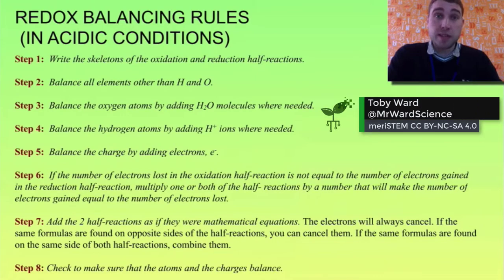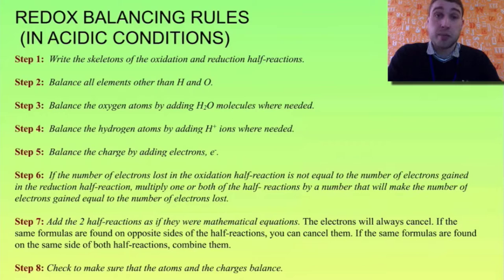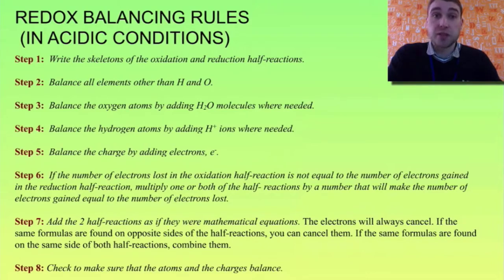Here are the rules for balancing a redox equation in acidic conditions. You need to write skeleton equations of the reduction and oxidation half reactions, balance for everything other than hydrogen and oxygen, balance for oxygen by adding water where required, balance for hydrogen by adding hydrogen ions where required, balance for charge by adding electrons, then get the same number of electrons in both half equations, then add together and cancel out anything on both sides of the arrow, and finally check.